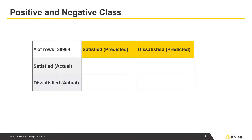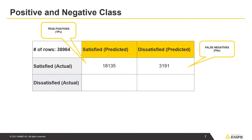Now let's take a look at the four counts that the confusion matrix reports. True positives are displayed in the top-left cell. True positives are customers who are actually satisfied, which is the positive class, and were correctly classified as such. False negatives are displayed in the top-right cell. These are customers who are actually satisfied but were incorrectly classified as dissatisfied, which is the negative class.